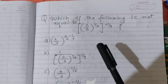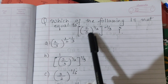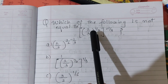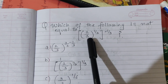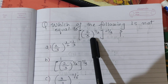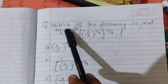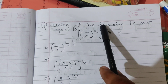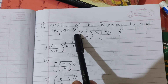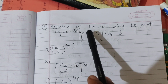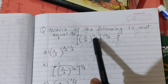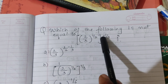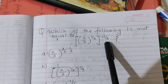Hello students. Let's solve this question from 9th class mathematics chapter 1, algebraic expressions. The question is: which of the following is not equal to (2/3)^(1/2) whole raised to (-1/3)?